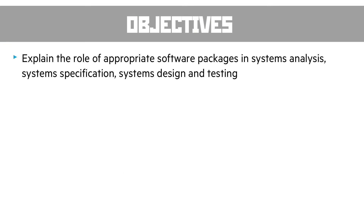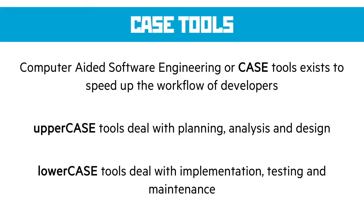The next set of objectives are to explain the role of appropriate software packages in systems analysis, system specification, design, and testing. Essentially, what we're talking about here is CASE tools — an acronym for computer-aided software engineering. And because computer scientists are comedy geniuses, we have two sections: upper case tools, which deal with planning, analysis, and design — everything before the coding starts — and lower case tools, which deal with implementation, testing, and maintenance, once you've started actually building the thing.